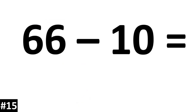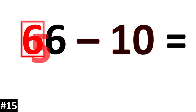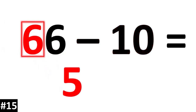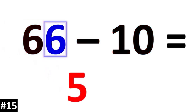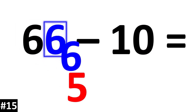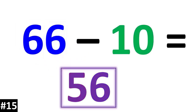66 minus 10. The tens value of 6 is going to go down to 5. The ones value of 6 is going to stay the same, so 66 minus 10 is 56.